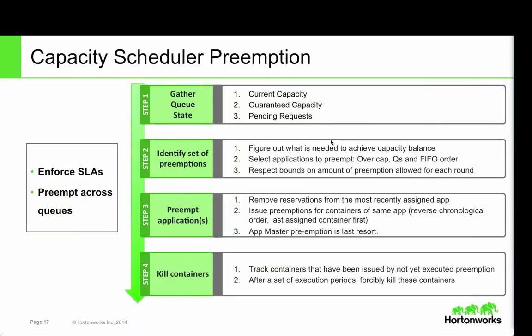The last feature we want to cover for YARN 2.1 is capacity scheduler preemption. The capacity scheduler has been around for a while — it's a scheduler running some of the largest Hadoop installations in the world, with built-in support for capacity guarantees and user limits. Now we are adding preemption to that. The fundamental goal of preemption is to ensure that queues and resources in the cluster are shared in a very elastic manner.